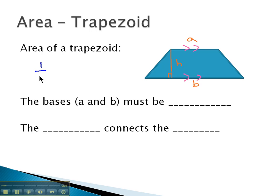To find the area, we use the formula one-half times the height times the sum of the bases, A plus B. Again, it's important that these bases must be parallel to each other, and the height is what connects the bases at a right angle or a 90-degree angle.